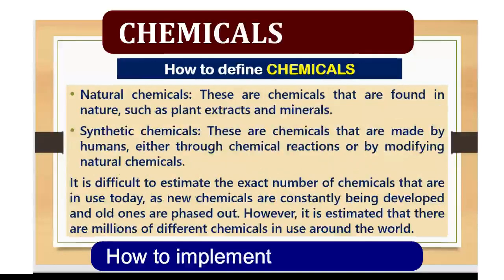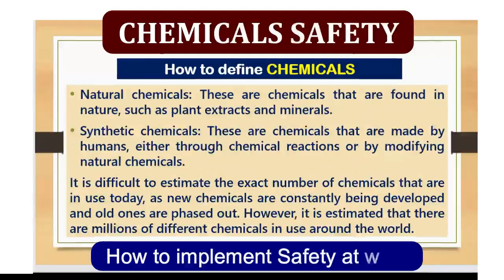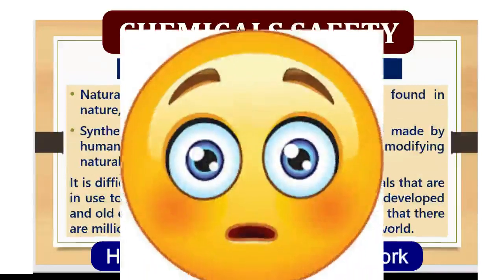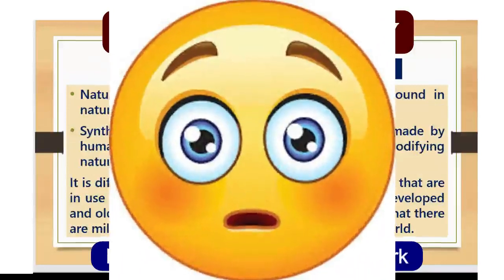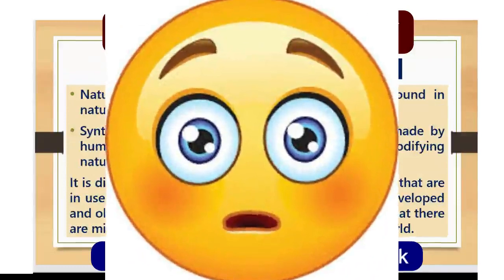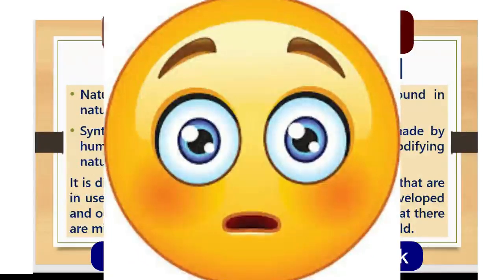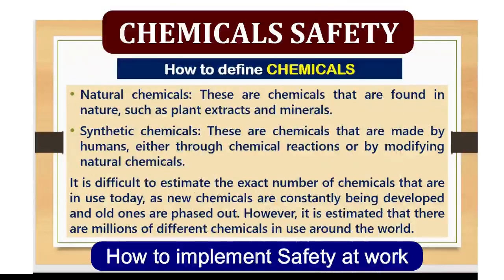Number 4, natural chemicals. These are chemicals that are found in nature, such as plant extracts and minerals. Number 5, synthetic chemicals. These are chemicals that are made by humans, either through chemical reactions or by modifying natural chemicals.